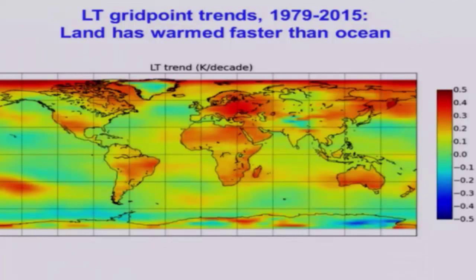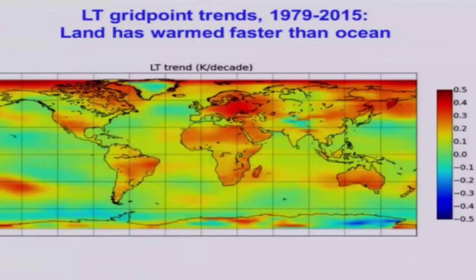We really don't understand the surface emissivity changes in the microwave — these are all microwave measurements in the 50 to 60 gigahertz band. So that's an unknown of what's going on there. The Himalayas are also uncertain, and Antarctica is also uncertain because you've got the same effect going on — that big ice sheet sticking way up and influencing the satellite measurements considerably.